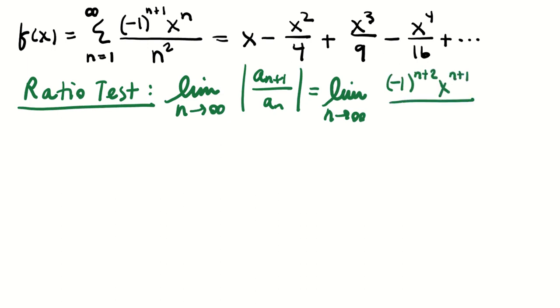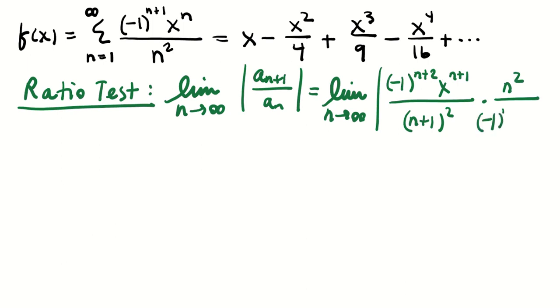Wherever I see n, I plug in n+1. So the next term becomes (−1)^(n+2) · x^(n+1) / (n+1)², divided by (−1)^(n+1) · x^n / n².